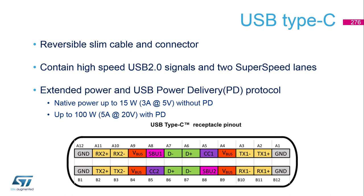Signals for both high speed (USB 2.0 specification) and super speed (USB 3.X specification) are included and doubled in order to keep the reversibility of the connector. With a USB Type-C cable you can encounter full-featured cables containing all signals, cables missing the super speed so only high speed communication is possible, or cables completely without any data communication intended only for power delivery.